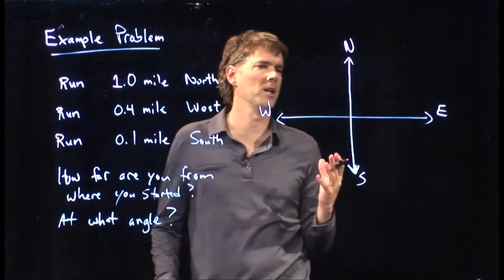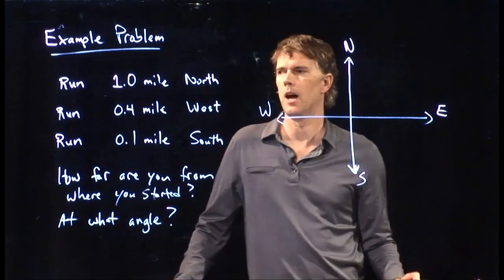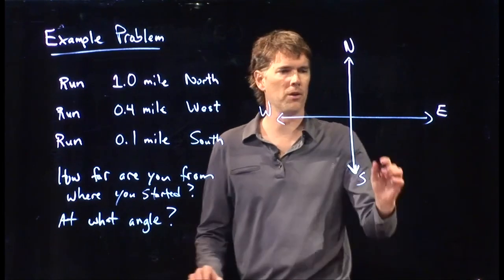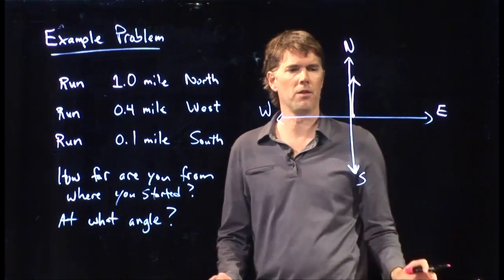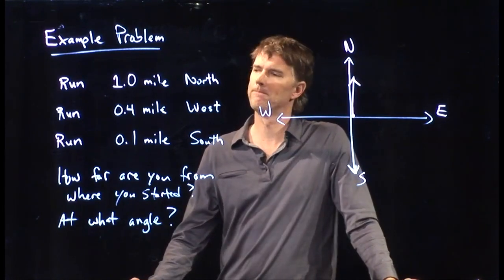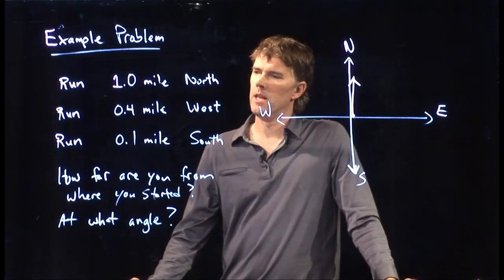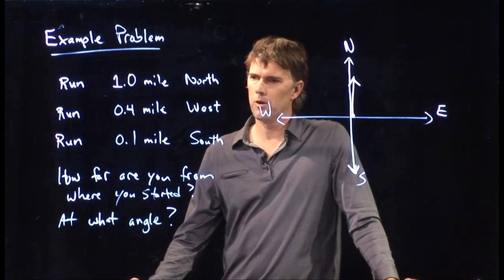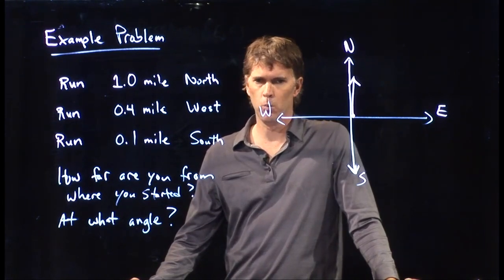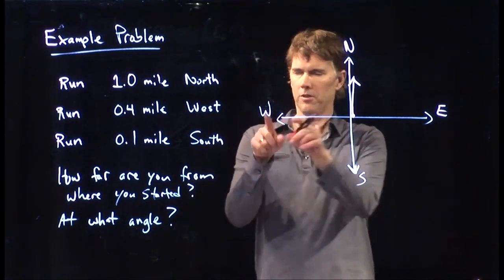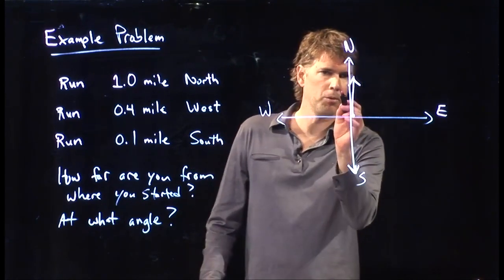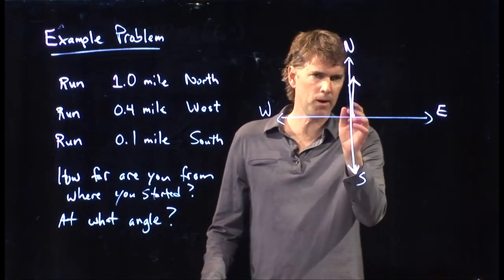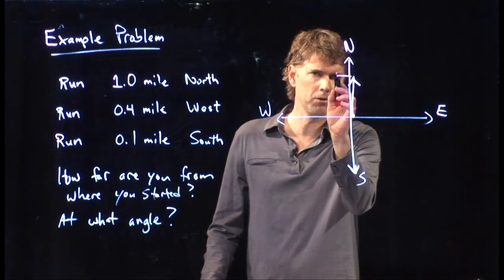Now let's visualize this. We start right there and go one mile north — that's the first movement. Then we run 0.4 miles west, which is off to the left, not quite half of the arrow we just drew — something like that.